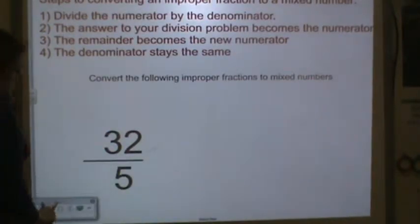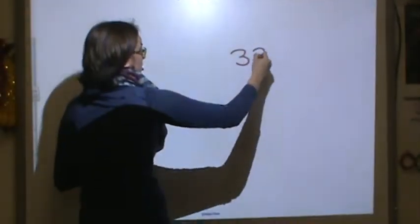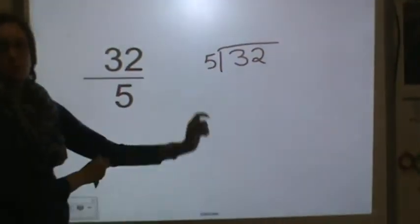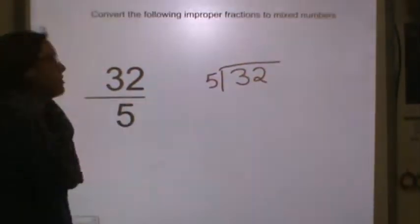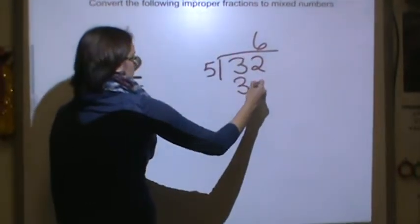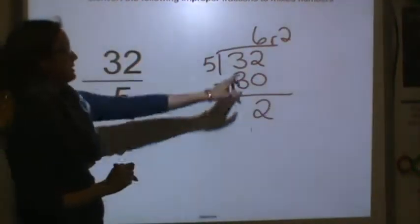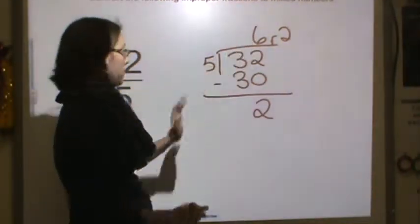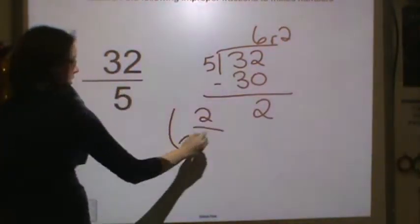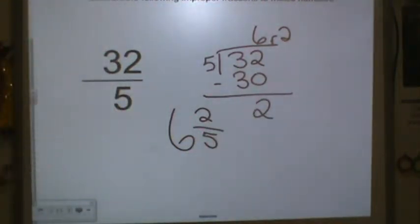Let's try another one. Let's do 32 fifths. So remember we're going to divide 32. And the size of our group is 5. So 32 into equal groups of 5. So how many 5s are in 32? 6. Multiply. 5 times 6 is 30. Subtract. And you get 2. So you have a remainder of 2. Remember in our directions. The answer to your division problem becomes the new whole number. The remainder is your new numerator. And your denominator always stays the same because the size of your group does not change.